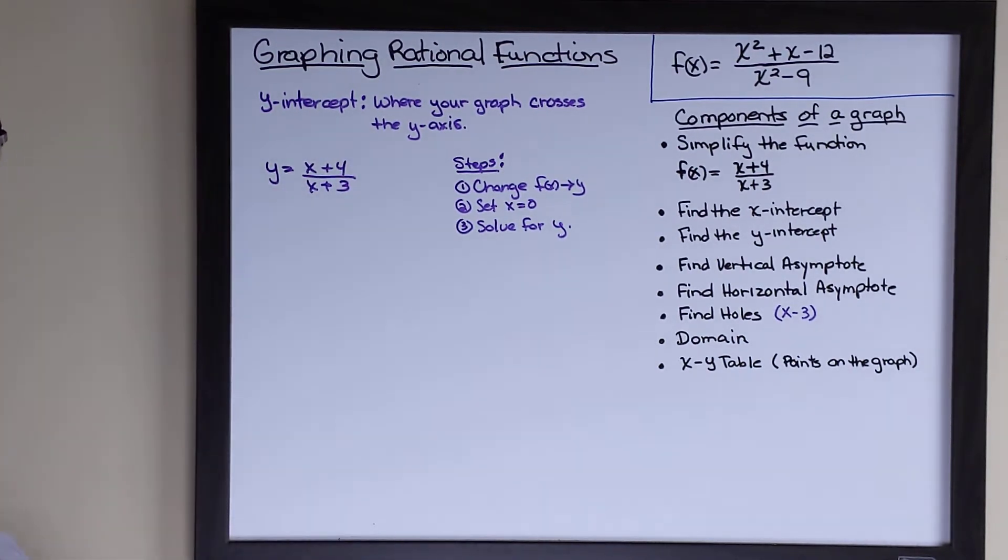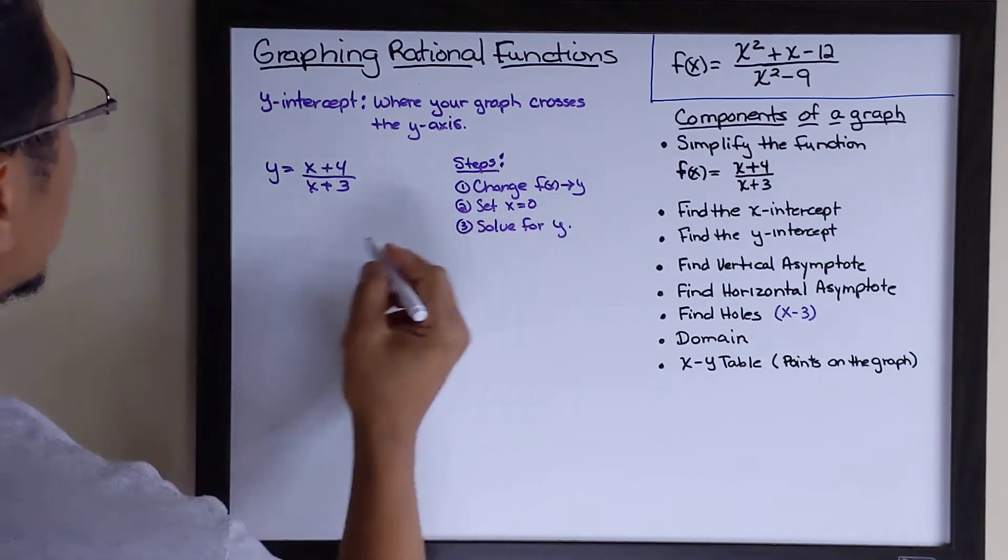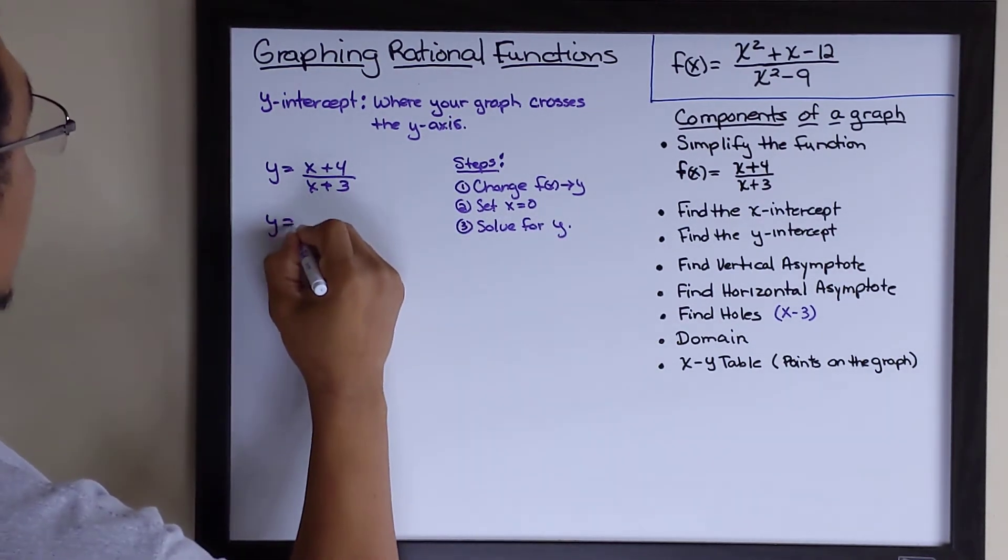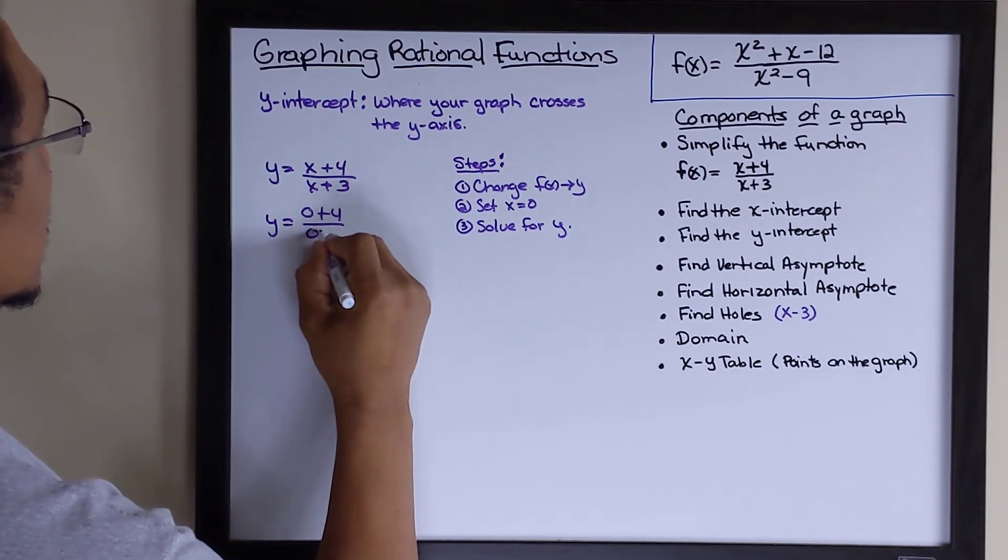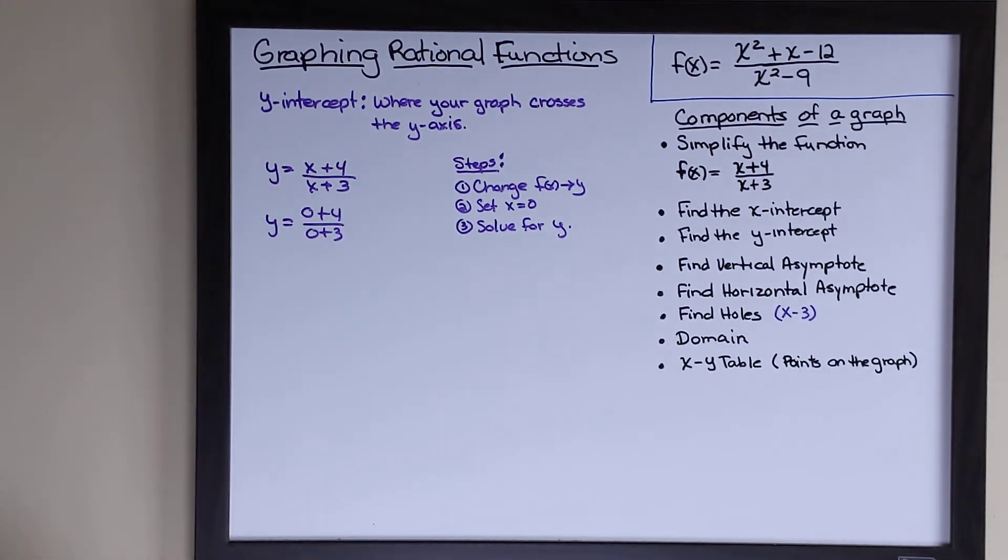The next step is to set x to 0. Let's go ahead and do that. So anywhere there's an x, we're going to put in a 0. So, 0 plus 4 over 0 plus 3. Alright?